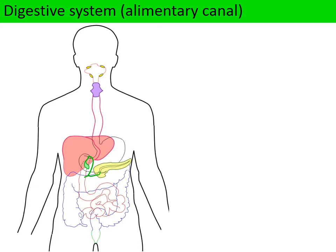The human digestive system is basically a long tube with specialized structures along its length, otherwise known as the alimentary canal. There are four main parts to human digestion. The first is ingestion: as holozoic feeders, we have to take in complex ready-made organic molecules through the mouth into the buccal cavity.